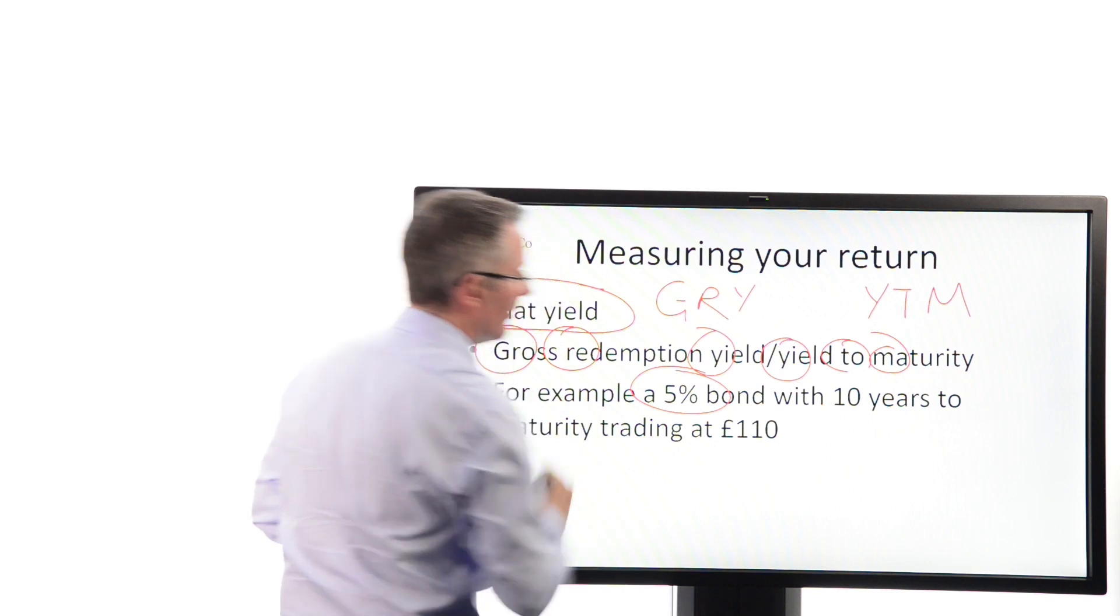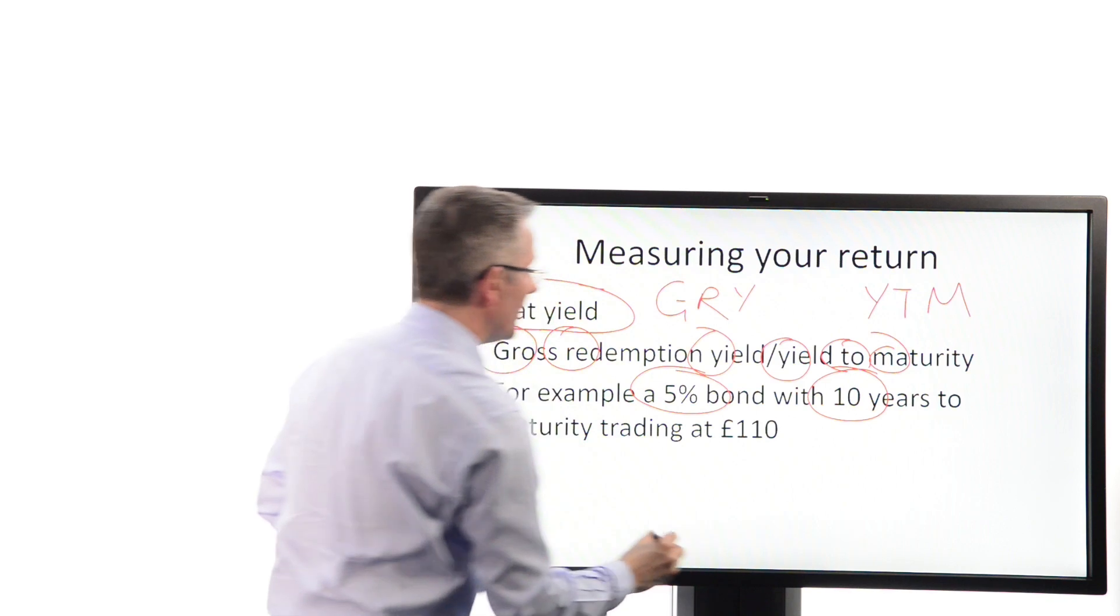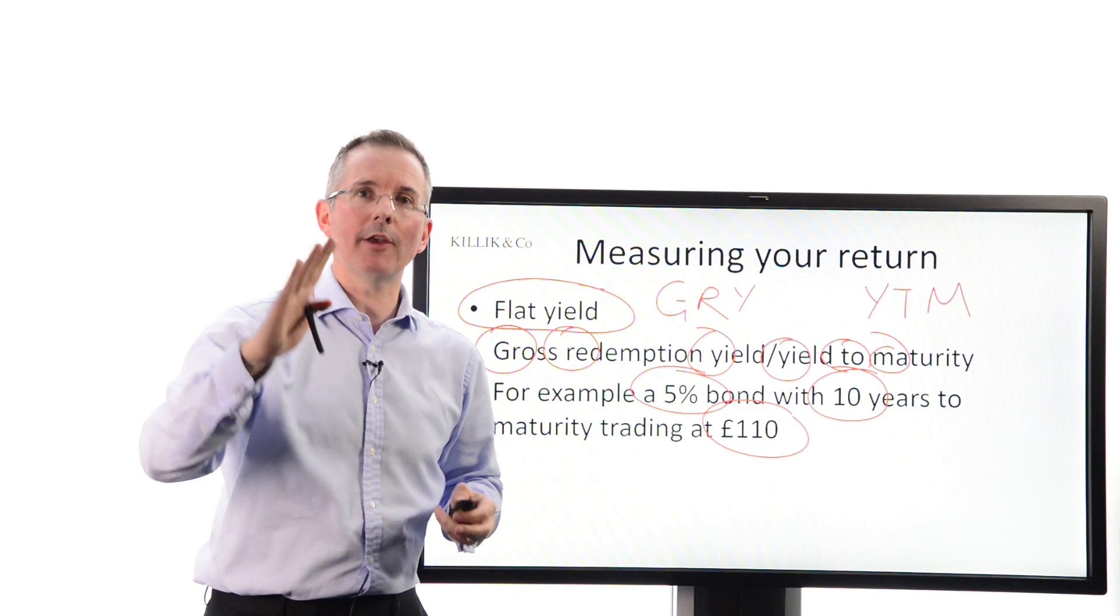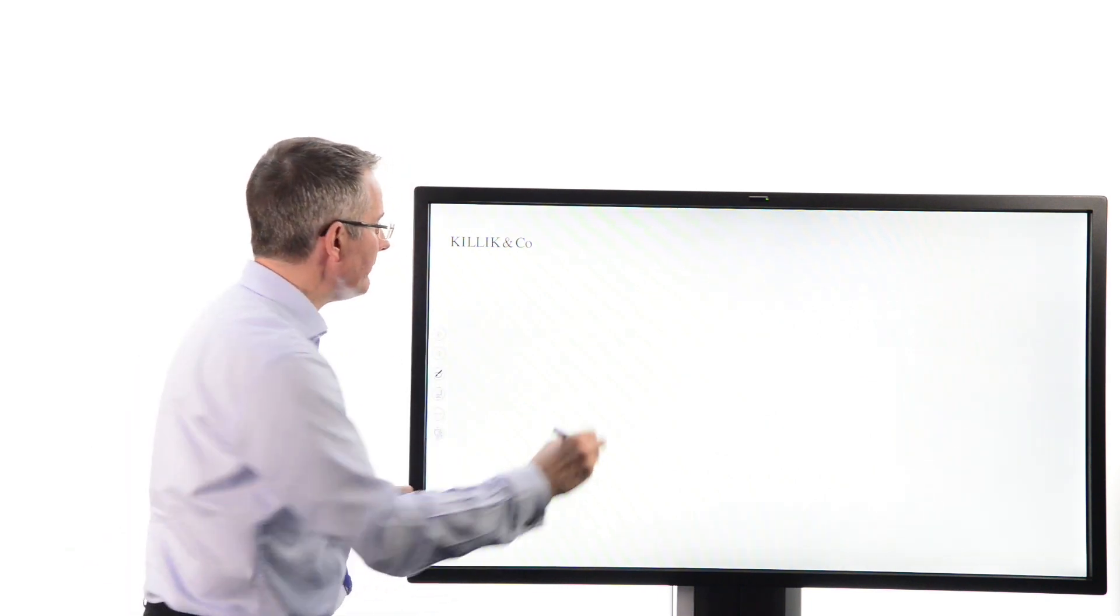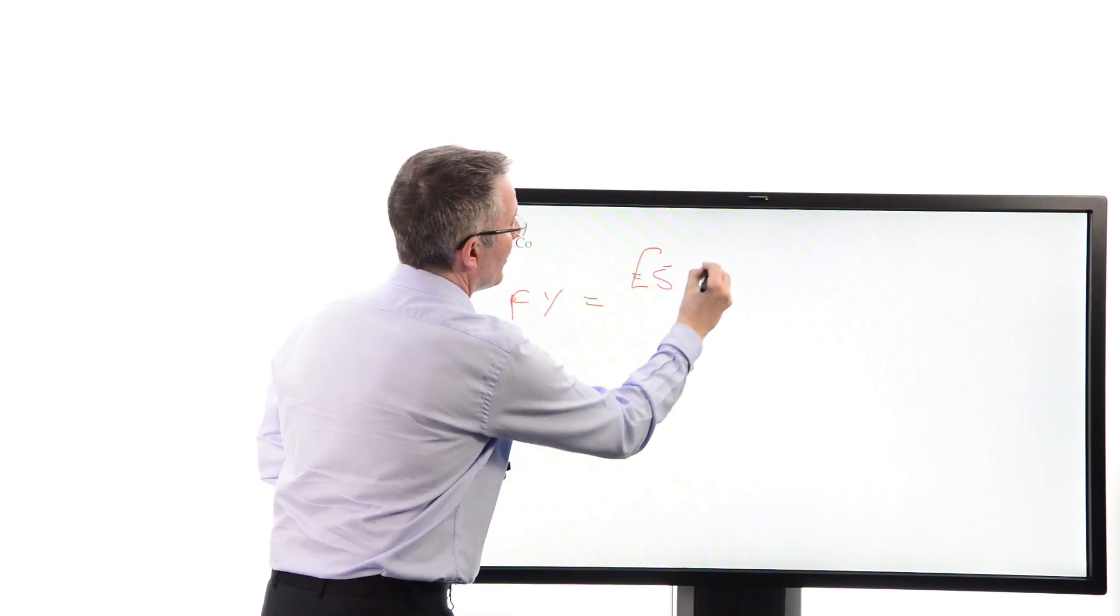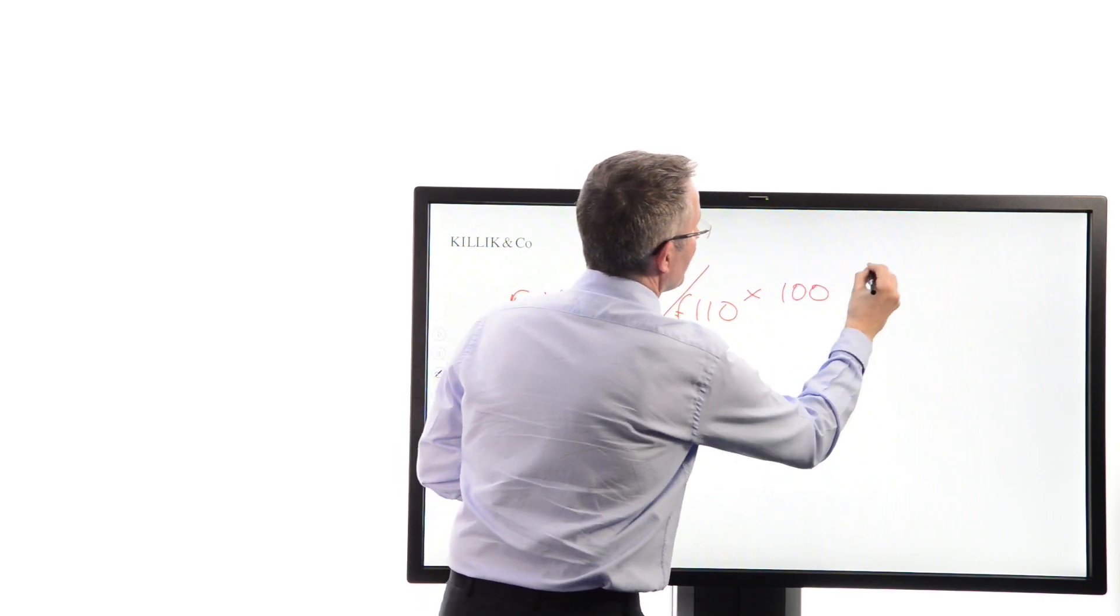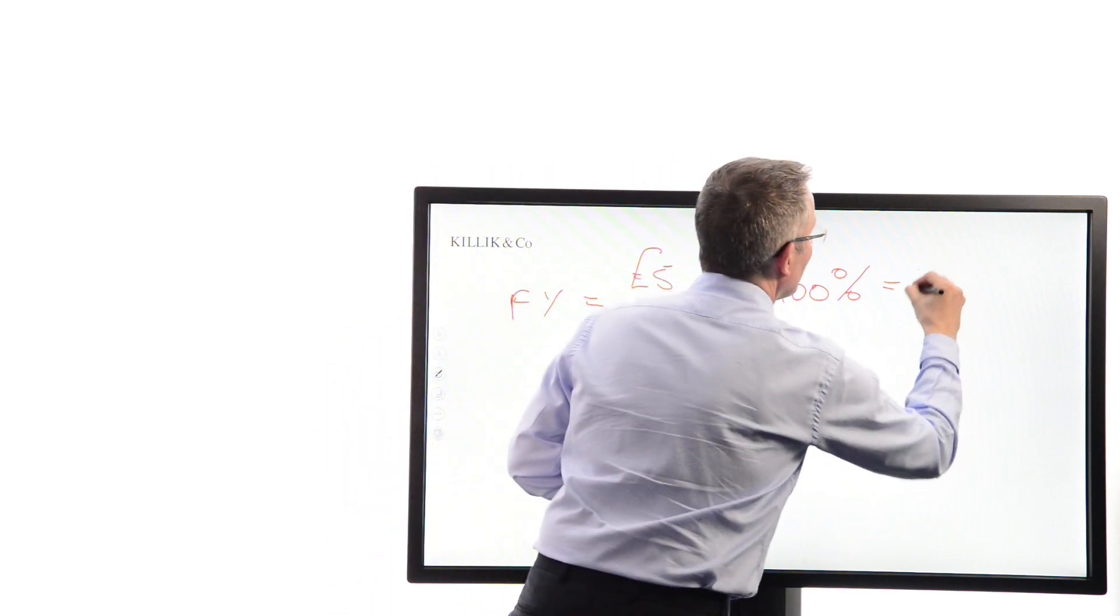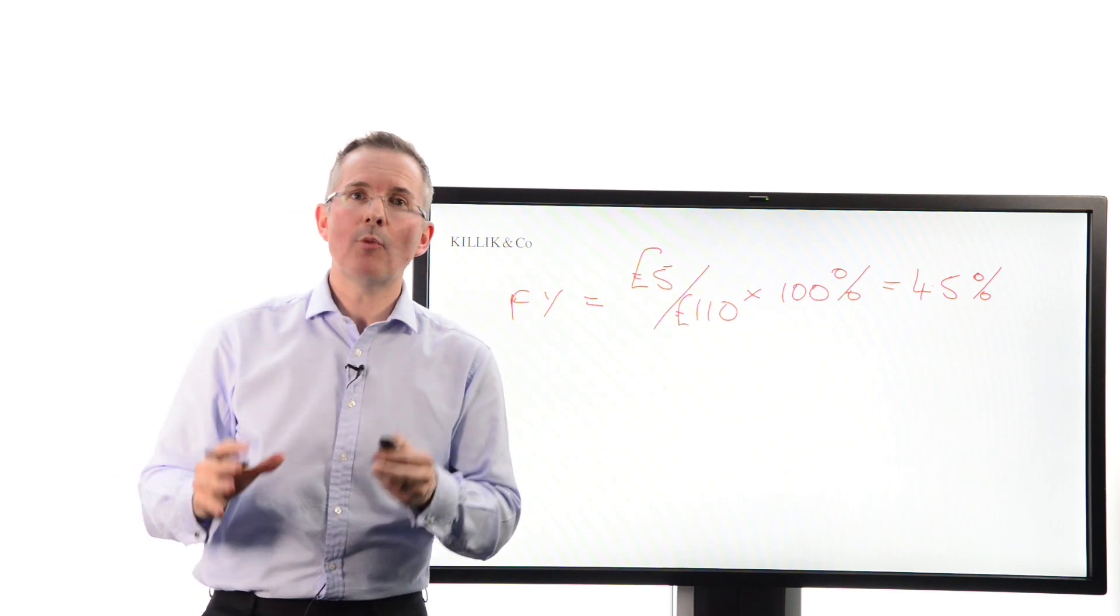Let's take a 5%, that's the coupon rate, so £5 per year is your coupon bond, with 10 years to run, trading at £110. So trading above nominal value. People have been buying it, pushing the price up. How would the flat yield look? Nice and simple. The flat yield, I call it the FY, is simply your annual coupon, £5 as a percentage of the price you've got to pay to buy the thing. So very straightforward. £5 as a percentage of 110 is 4.5%. I'll stress, I'll go quickly here because this is normally done for you, but it's worth being aware of where the numbers have come from.